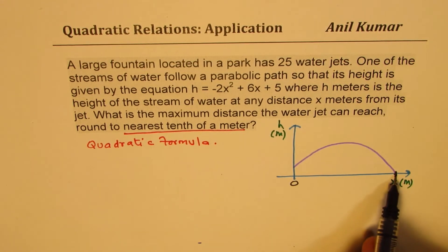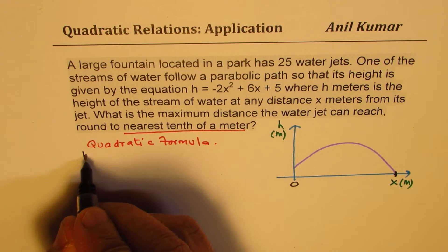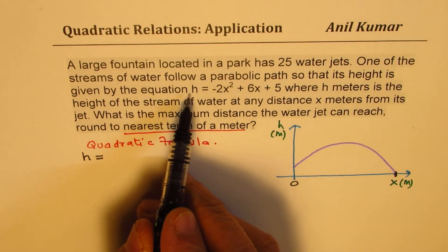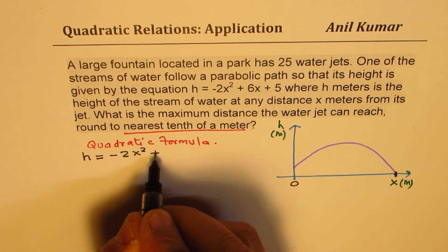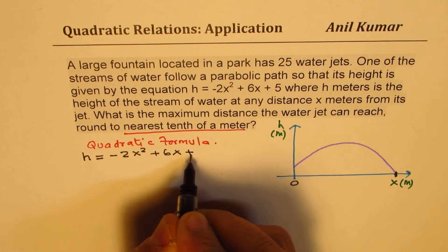Now, at this point, you can say height is 0. So the formula given to us is which the model, which represents the height is h equals to minus 2x squared plus 6x plus 5.